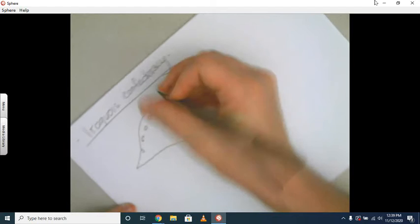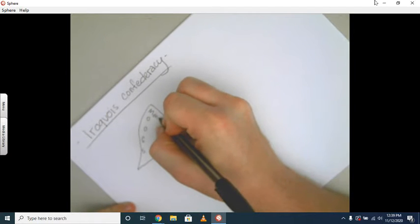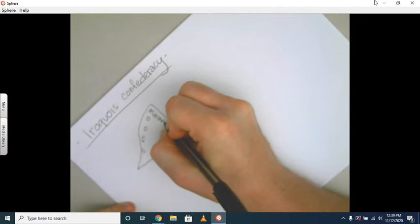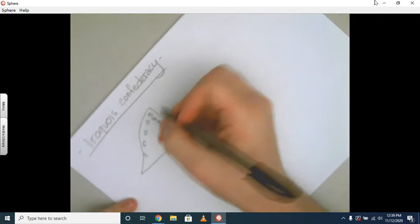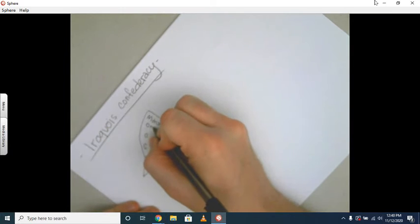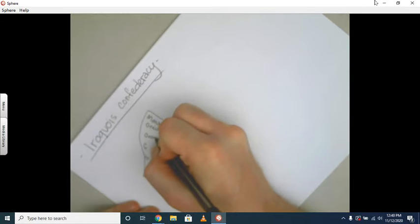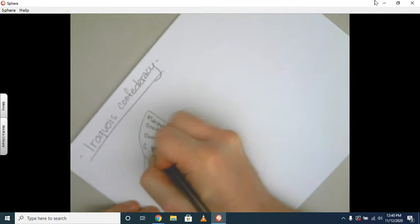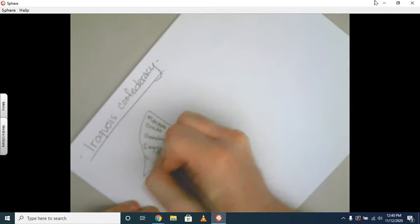We have the Mohawk—yes, that's where we get the hairstyle—the Oneida, Onondaga, Cayuga, and Seneca.